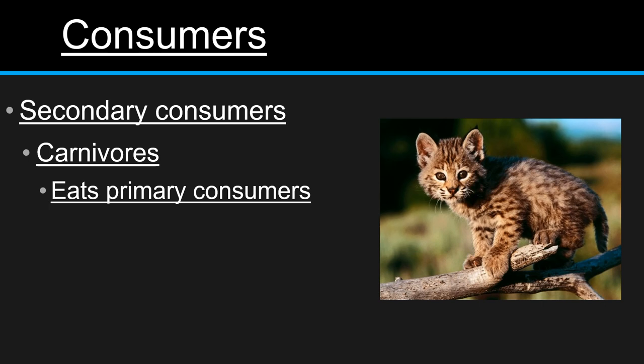The secondary consumers are carnivores. They're going to eat those primary consumers. Once again, this could be an omnivore. And they are going to be located here at the third trophic level.